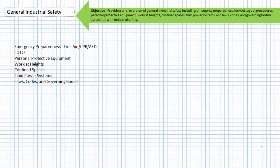Good day and welcome to Big Bad Tech. I'm your instructor Jim Pytel and today's topic of discussion is general industrial safety. Our objective today is to provide a brief overview of general industrial safety. We'll discuss emergency preparedness, lockout and tagout procedures, personal protective equipment.